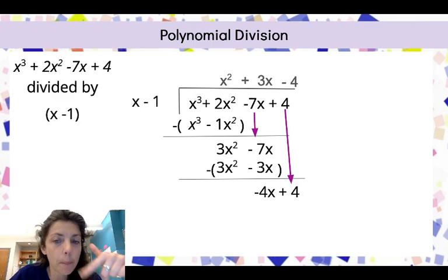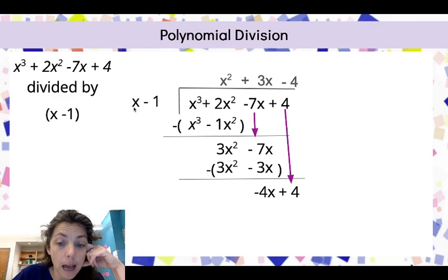I'm going to put that above where the other numbers are. Remember, we want to kind of keep this place value order. And I'm going to multiply negative 4 times my factor. Negative 4 times x is negative 4x. And negative 4 times negative 1 is positive 4.